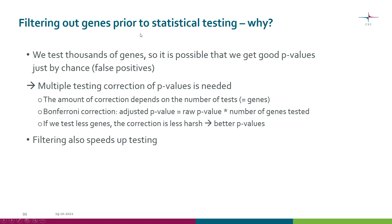Why would we want to filter out genes prior to statistical testing? We test thousands of genes, so it is possible that just by chance we get good p-values for some genes. Those genes might not actually be differentially expressed — we just get a small p-value for them, making them false positives. There are many multiple testing correction methods available, and the amount of correction applied depends on the number of tests, since each gene is an individual test.